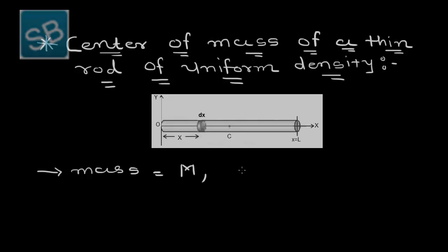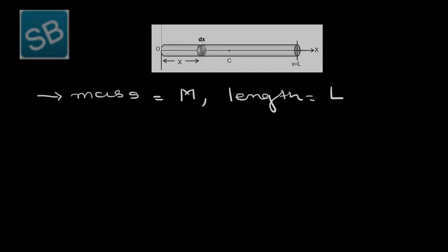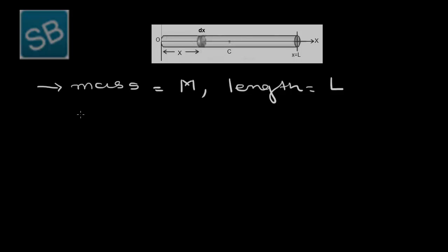It is having the length capital L, and the uniform mass density is equal to lambda. If you notice one thing here, in the positive x direction a thin rod is placed and the centre of mass which is not necessary at present so forget that.